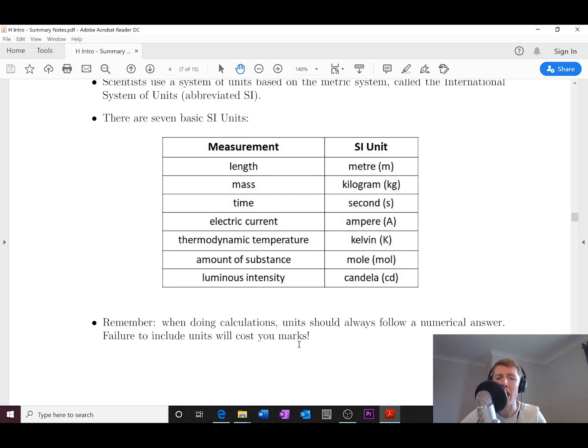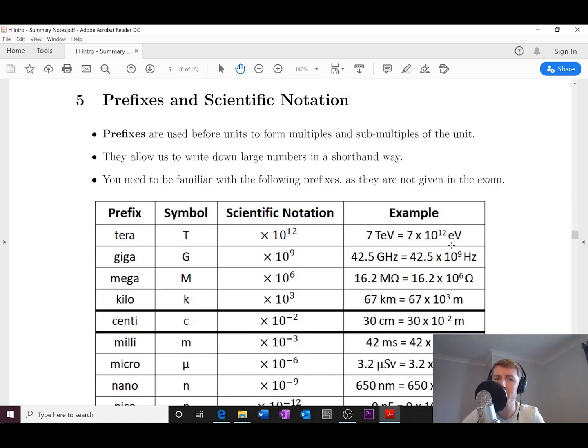So moving on, you'll remember that we use prefixes and scientific notation a lot in physics. Prefixes, remember, are just used before units in order to write them down in a shorthand way. So rather than writing down loads and loads of numbers as a final answer, we can use prefixes instead. Or in questions, instead of putting in really big numbers for you to answer, they use prefixes instead.